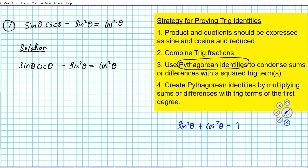This particular identity gives us cosine squared theta equal to one minus sine squared theta. And then a further variation is cosine squared theta equals one minus sine squared theta. Going back to the first equation, if we subtract cosine squared theta from both sides, that gives us a third form: sine squared theta equals one minus cosine squared theta. These three forms are sufficient for this particular proof.